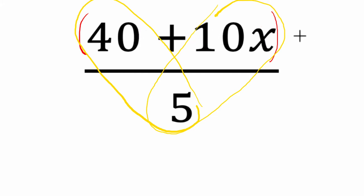If there were three terms up here, like plus 30y, we would divide that by 5 too. Any number of terms in the numerator, we need to divide by the value in the denominator.